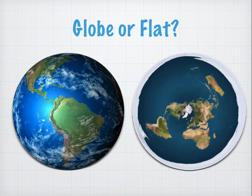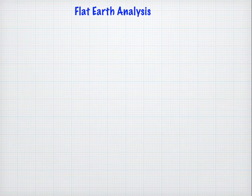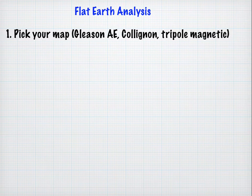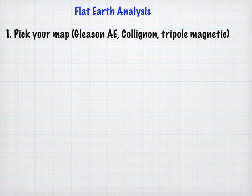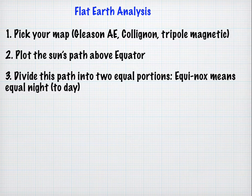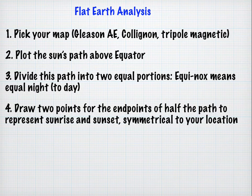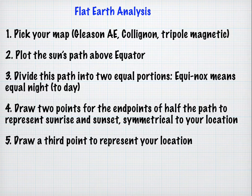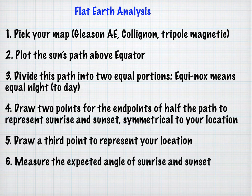Let's take a look at our data to see if we can determine evidence for either a globe or a flat earth. In the flat earth analysis, we're going to follow a process: pick your favorite flat earth map — either the Gleason AE map, the Colignan diamond map, the triple magnetic map, or others. Then plot the sun's path above the equator. Divide the sun's path into two equal portions, because equinox is Latin for equal night — equal night to day. Draw two points for the endpoints of half of the sun's path to represent sunrise and sunset, symmetrical to your location, then draw a third point to represent your location and measure the expected angles of sunrise and sunset.